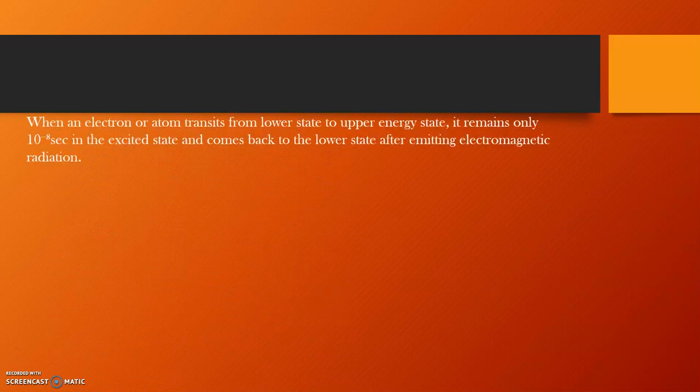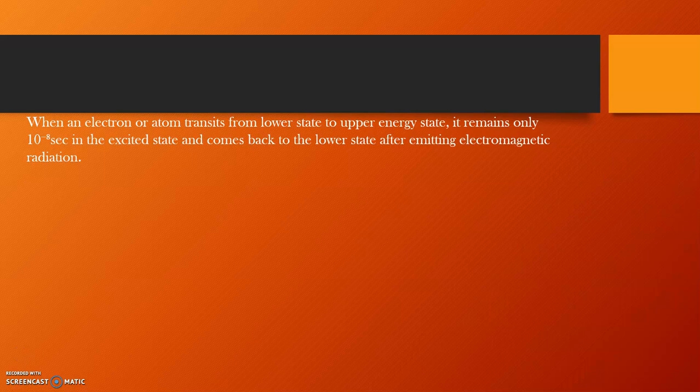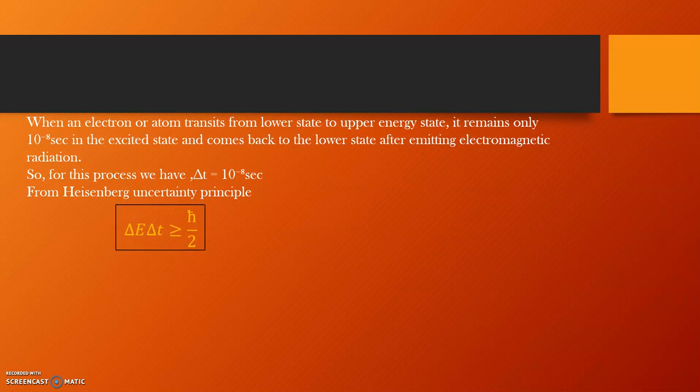When an electron or atom transits from lower energy state to upper energy state, it remains there only for 10 to the power minus 8 seconds and comes back to the lower state after emitting electromagnetic radiation. So, for this process, we have the time spread to be only 10 to the power minus 8 seconds. So, from Heisenberg uncertainty principle relating energy and time, we can calculate the energy spread value. Putting the time value as 10 to the power minus 8 seconds, we see that the value of energy is not at all precise, but it is having a certain spread.